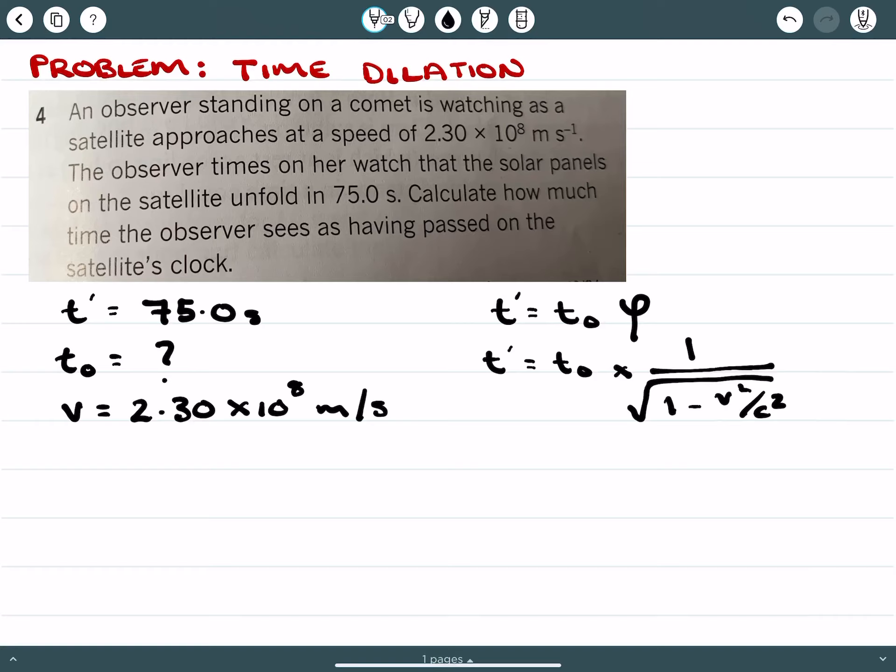We can start to ascertain what our proper time is going to be. Now obviously our dilated time is 75 seconds. Proper time is like so. And this is going to be multiplied by 1 over square root 1 minus v squared over c squared.